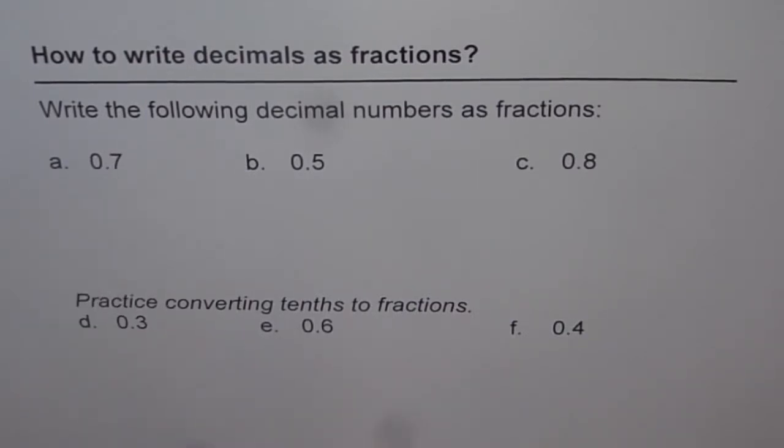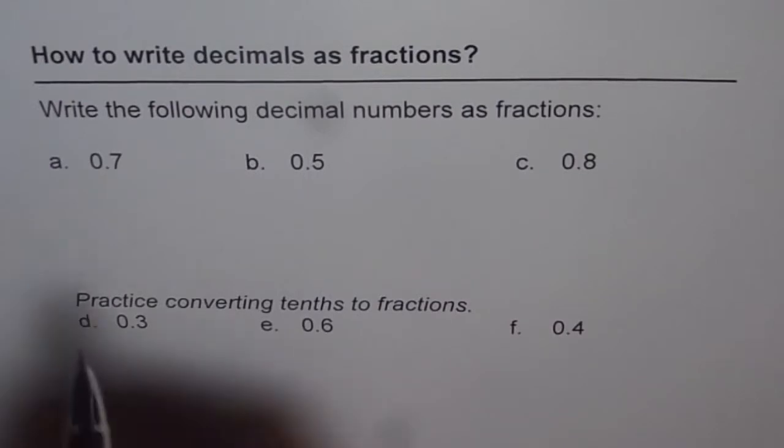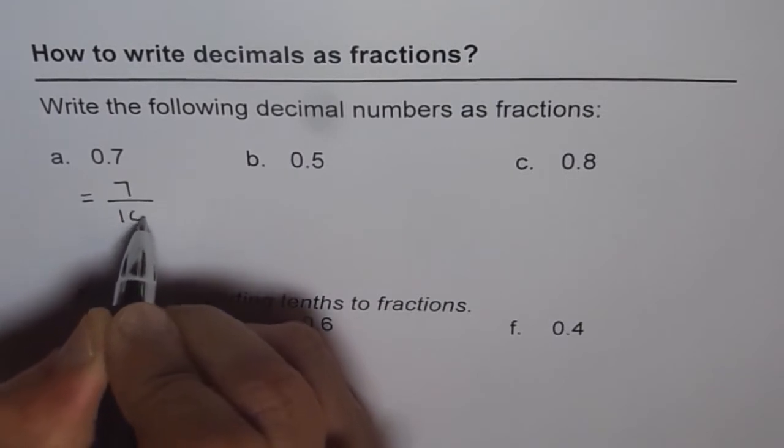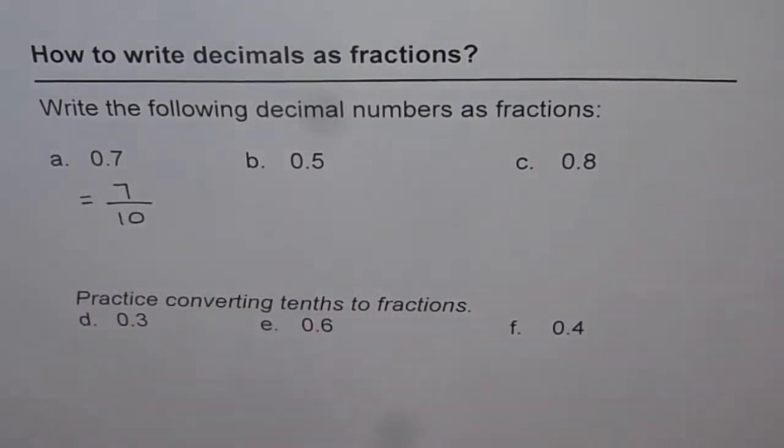0.7, how do you read it? You read it as seven tenths. That is in fractions, seven tenths. That means this is equal to seven out of ten. That is the meaning of seven tenths.